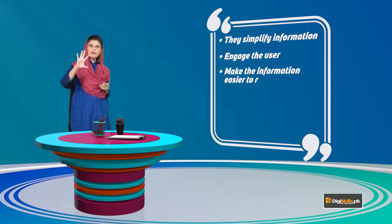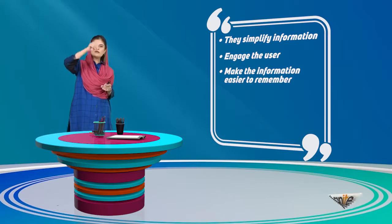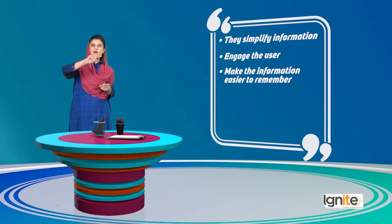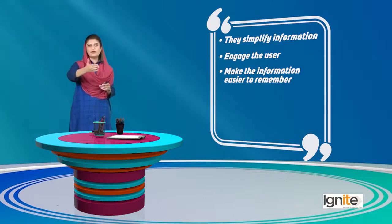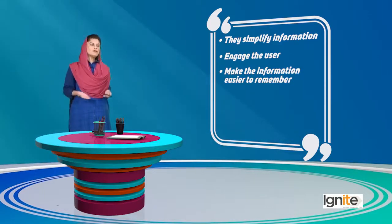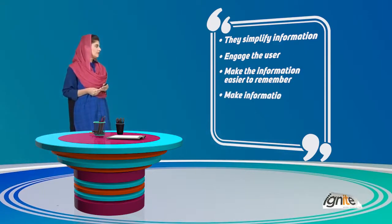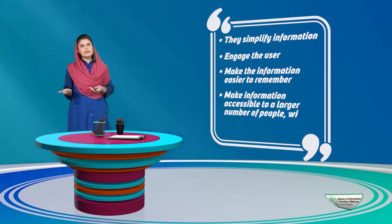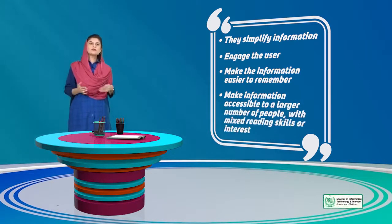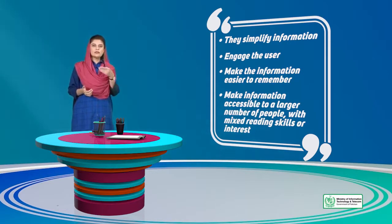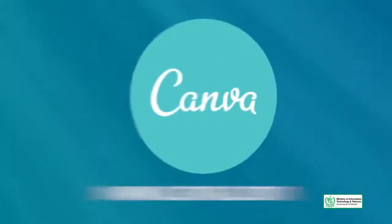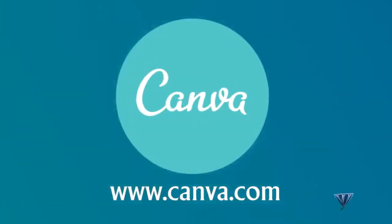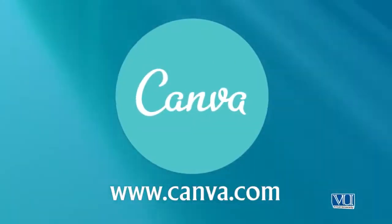Because information is in visual form, you will remember it better — for example, you might recall that there were three buildings in an infographic, or a specific figure in a pie chart. It is easier for information to be retained this way, and people can access it more easily. You can look at Canva's website.